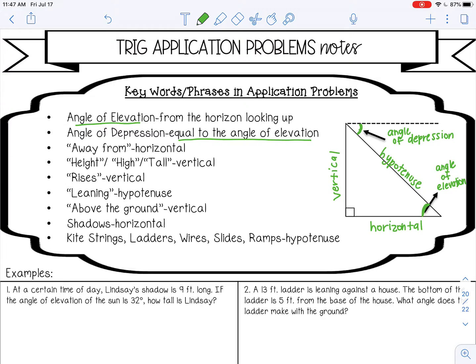If you see the phrase away from, that's going to be the horizontal, the bottom of the triangle. Things like height or high or tall is vertical. So the left-hand side. If it says rises, that's vertical. If it says leaning like a ladder is leaning against a building, that's the hypotenuse.